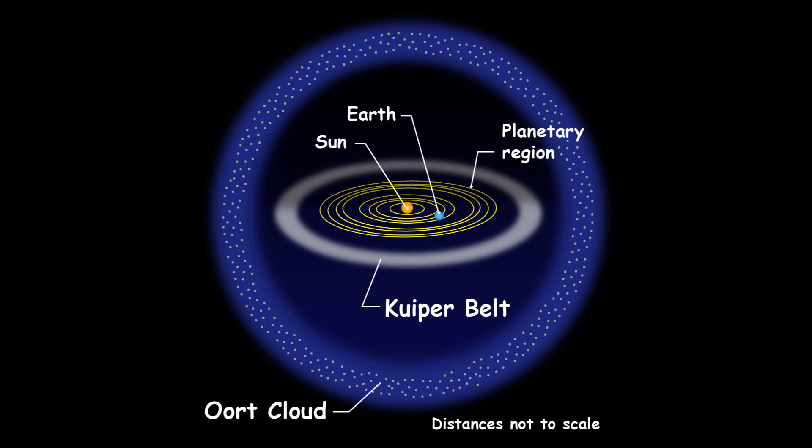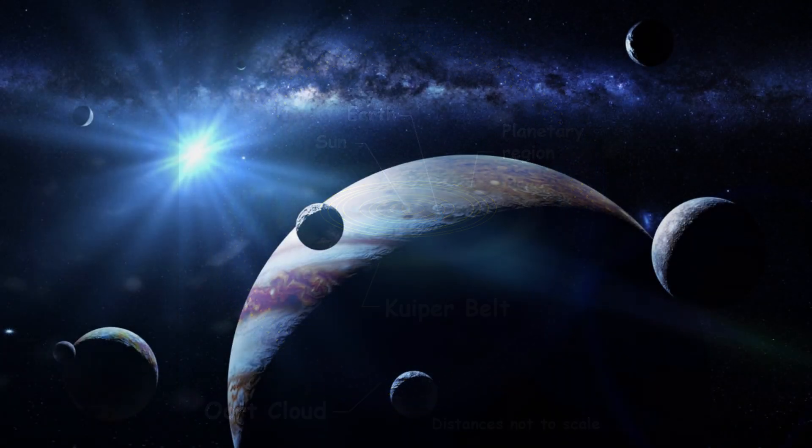The Kuiper Belt is a region beyond Neptune that contains many small, icy objects. Jupiter is the largest planet in our solar system and has at least 79 moons.